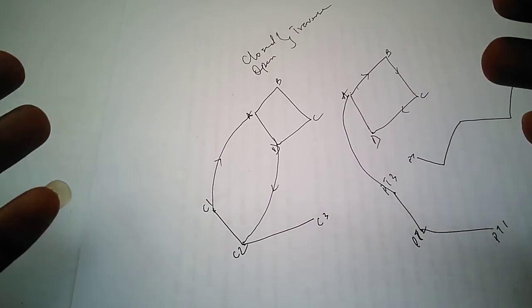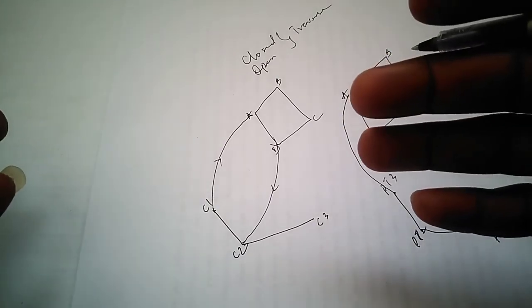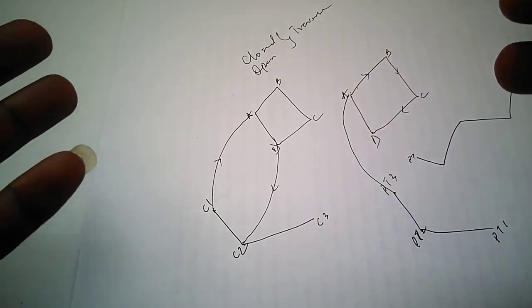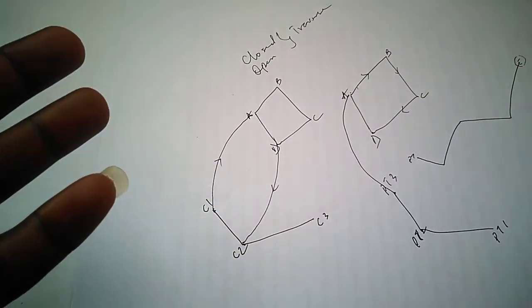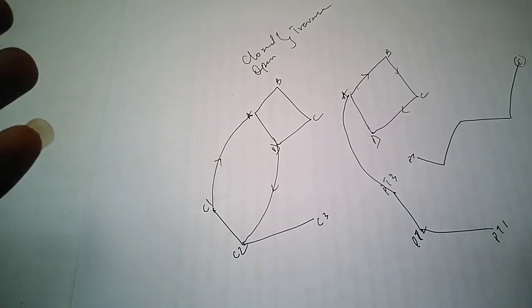We've been able to discuss what traversing is, the two types of traversing which are closed and open traverses, and we were also able to discuss some things about the advantages and their limitations.